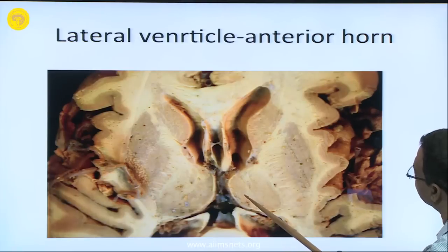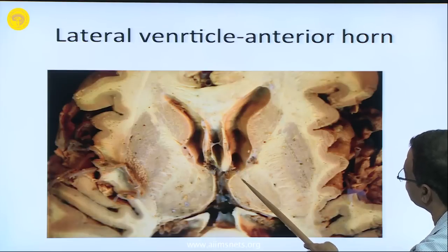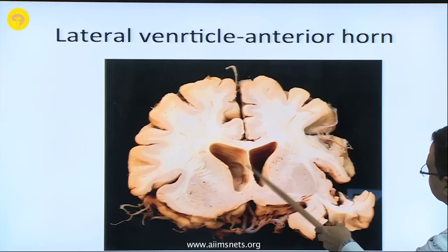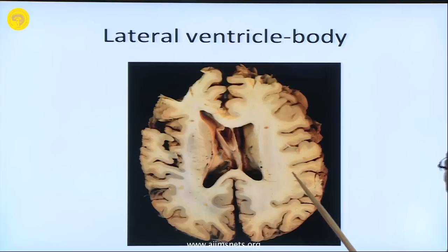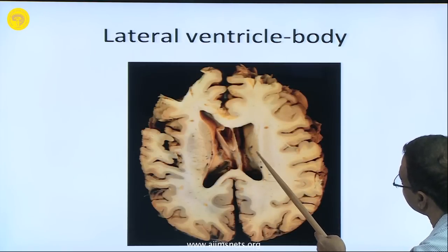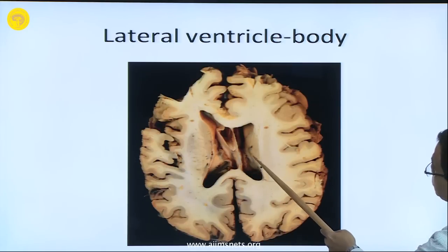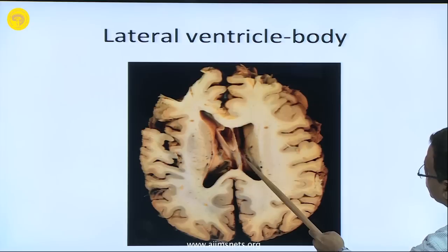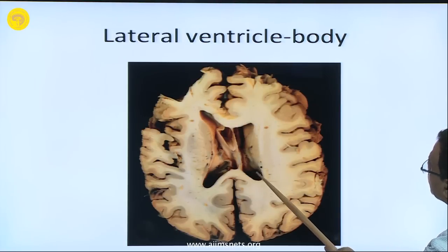This is the anterior horn where the septum pellucidum has been removed — there is a cavity in the septum pellucidum. This is the anterior horn and you can see the lateral wall; the medial wall of the anterior horn is the head of the caudate nucleus, with the internal capsule and lentiform nucleus here. This is the body of the lateral ventricle where you can see the body of the caudate nucleus and the choroid plexus lying over the thalamus — the thalamus is forming the floor of the lateral ventricle.